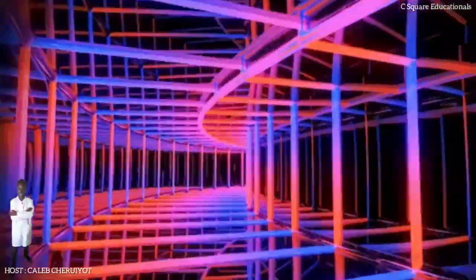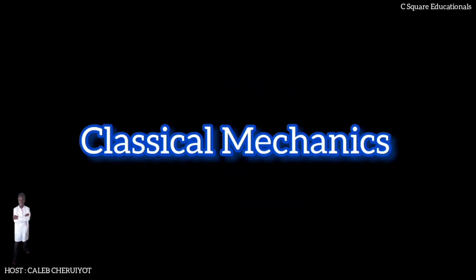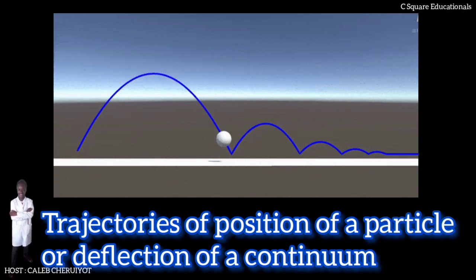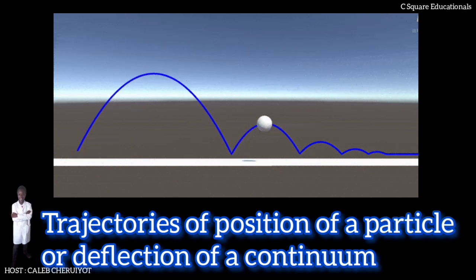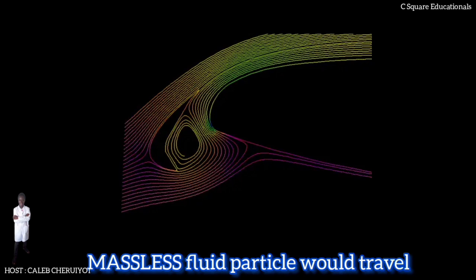Higher dimensional analogues are studied in both pure and applied mathematics. Once the velocity field is calculated, other quantities of interest such as pressure or temperature may be found using dynamical equations and relations. It is different from classical mechanics where solutions are typically trajectories of position of a particle or deflection of a continuum. Studying velocity instead of position makes more sense for a fluid. The streamlines of a vector field interpreted as a flow velocity are paths along which a massless fluid particle travels.